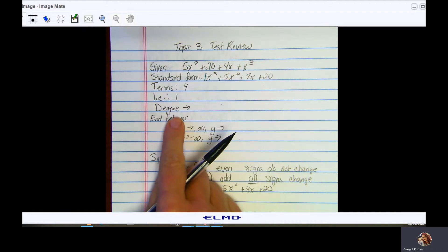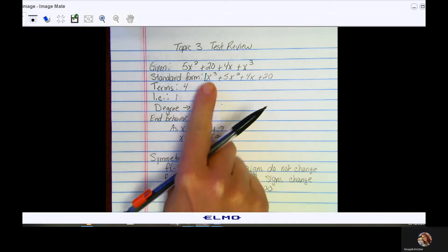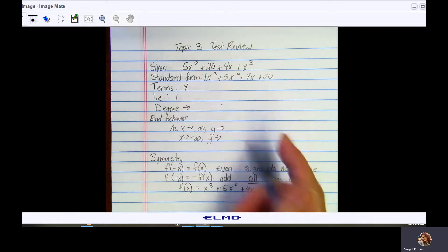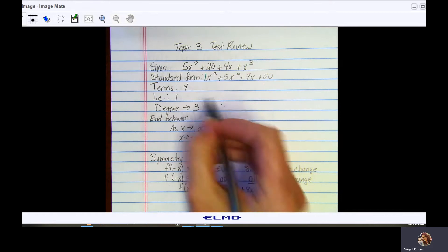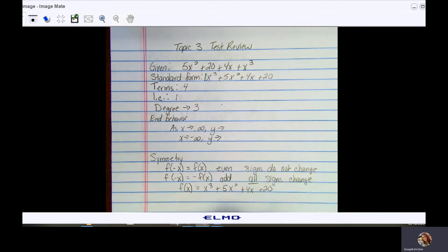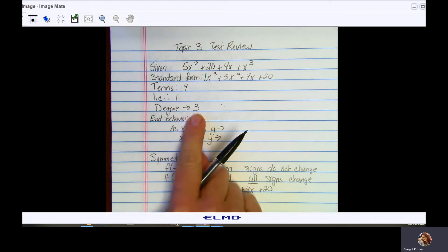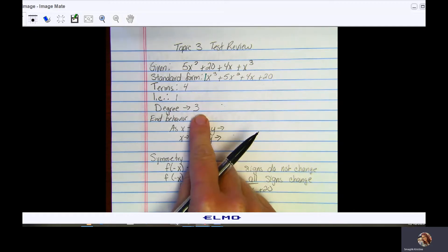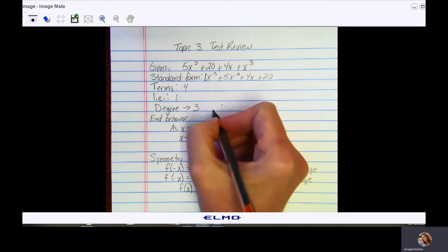The degree of the polynomial is the highest degree of the term. This has the highest degree of 3. If you are in standard form, it's going to be the exponent that you see on your first term. If we are a degree of 3, that means if we classify this polynomial by degree, this is a cubic.